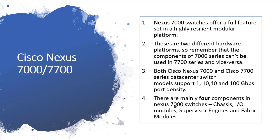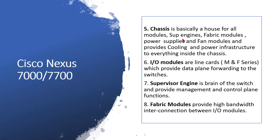There are four main components in the 7000 series, which includes the 7700: first, the chassis; second, input/output modules or payload modules; third, supervisor engines, which are the CPU or brains; and fourth, fabric modules. The chassis is just like your house — it contains all the supervisor modules, input/output modules, fabric modules, power supplies, fan trays, and provides cooling for the complete infrastructure inside.